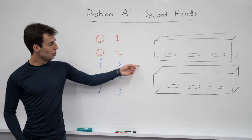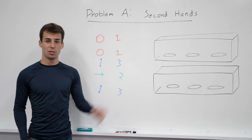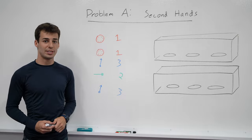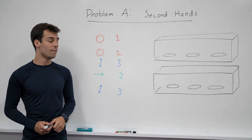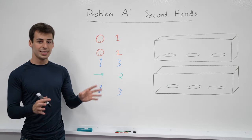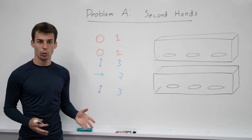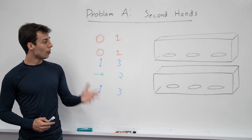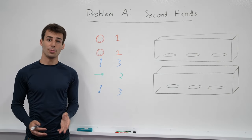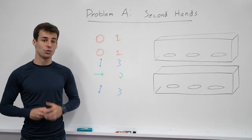She has two display cases and needs to organize all of her parts into the two display cases, but she has some restrictions on how she wants to do that. First, she doesn't want any display case to have two of the same part — she thinks that would look boring. Also, each display case can only hold at most k items; in this case, k equals 3.